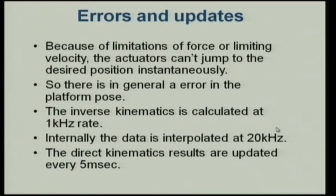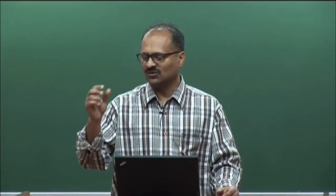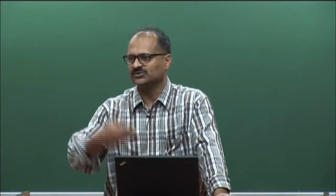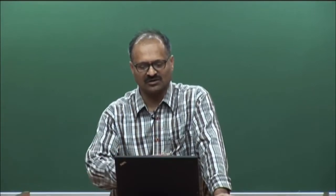You can calculate inverse kinematics at 1 kilohertz — 1000 times per second — using modern processors with no problem. Once you are calculating inverse kinematics, internally you interpolate at 20 kilohertz. You have a microcontroller controlling actuator position in a closed loop running at 20 kHz. So if you move 20 millimeters over 1 millisecond, you split it into interpolated intermediate values — moving a fraction every step — and track that using Jacobian control or similar methods.